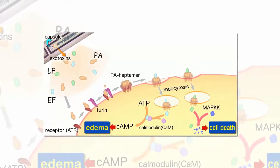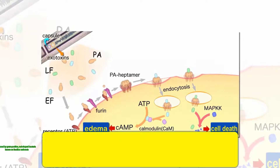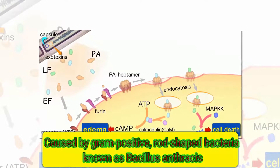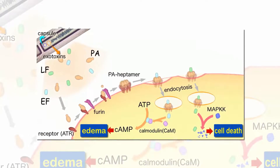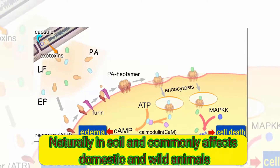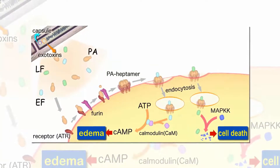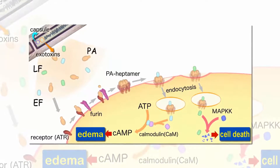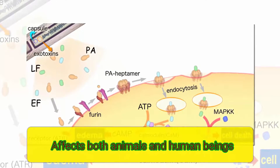Anthrax is a serious infectious disease caused by gram-positive, rod-shaped bacteria known as Bacillus anthracis. Anthrax can be found naturally in soil and commonly affects domestic and wild animals around the world. Anthrax was commonly used in warfare during early days. It spreads through wounds and cuts and is very deadly. It affects both animals and human beings.